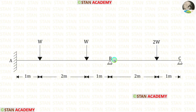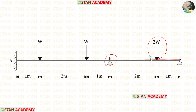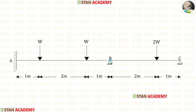Now let us take span BC. In this span, at joint B there will be a plastic hinge, and under the point load there will be a plastic hinge. At point C there will be no plastic hinge because it is a simply supported end. So in span BC there will be only 2 plastic hinges. Let us take this span and make the third mechanism.